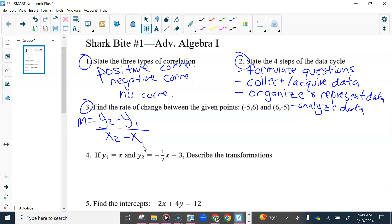I'm going to label those. So we have negative 5 minus 6 over 6 minus negative 5. And then subtract, negative 5 minus 6 is negative 11. 6 minus a negative 5 would become 6 plus 5. So we have negative 11 over positive 11, which is negative 1. Our rate of change or our slope is negative 1.